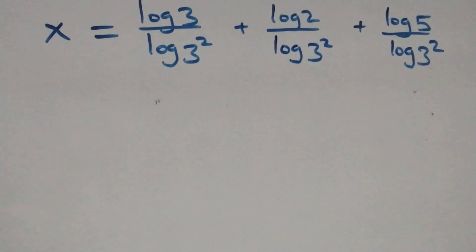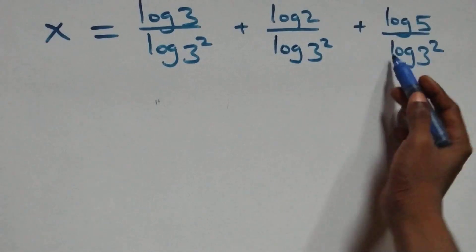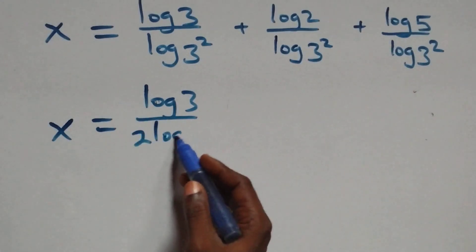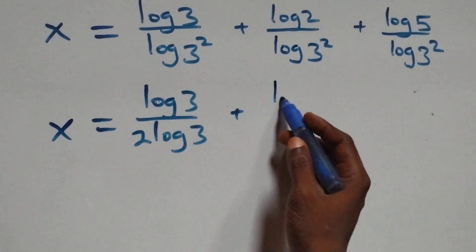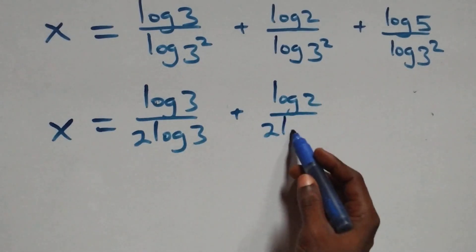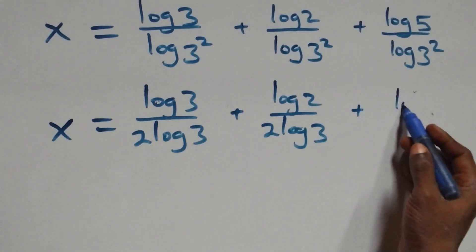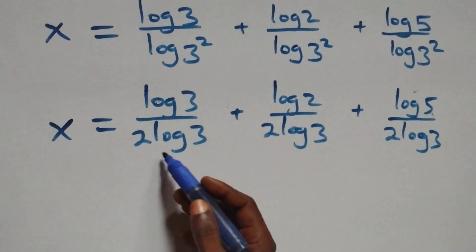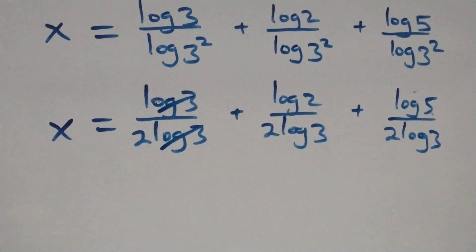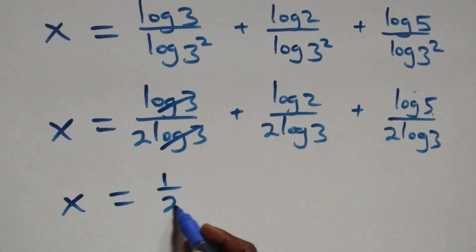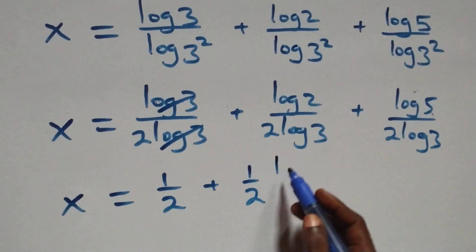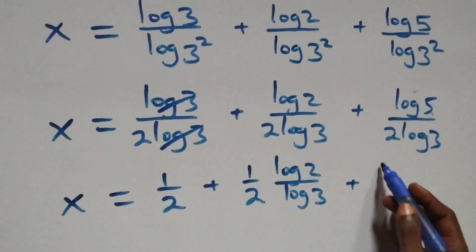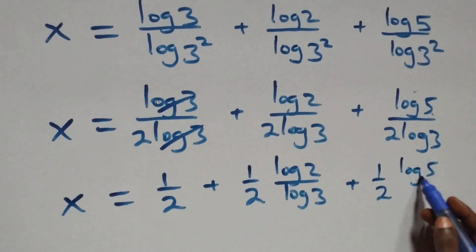Then we apply the power rule of logarithm — the squared comes down — and what we have becomes x equals log 3 over 2·log 3 plus log 2 over 2·log 3 plus log 5 over 2·log 3. Here log 3 cancels log 3, leaving 1 over 2, which implies x equals 1 over 2 plus 1 over 2 times log 2 over log 3 plus 1 over 2 times log 5 over log 3.